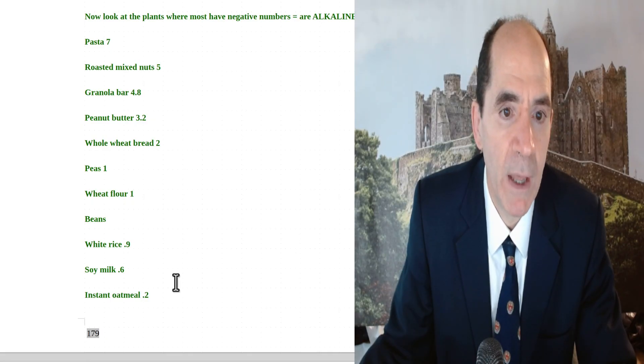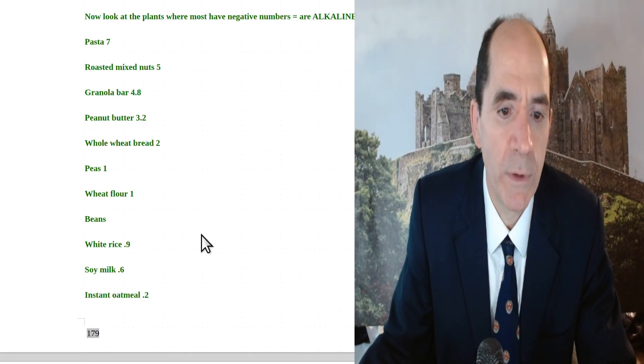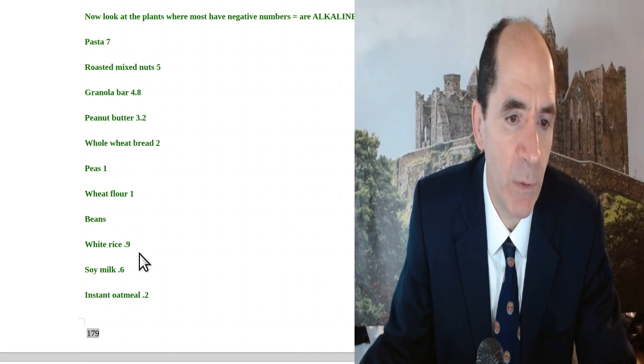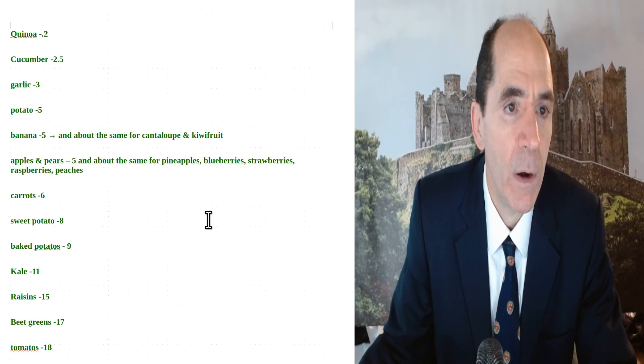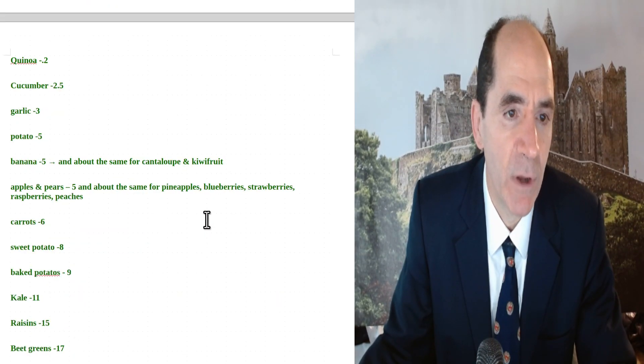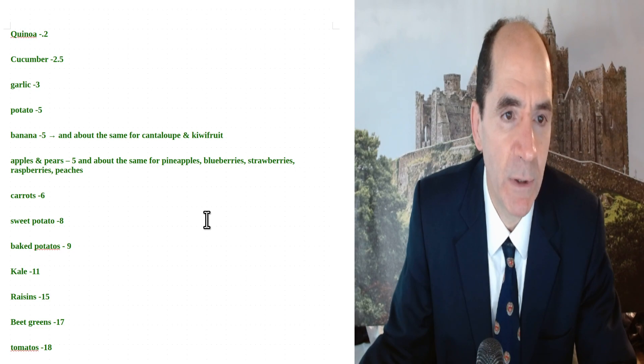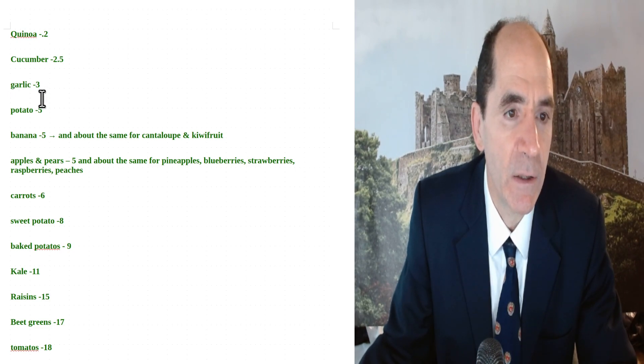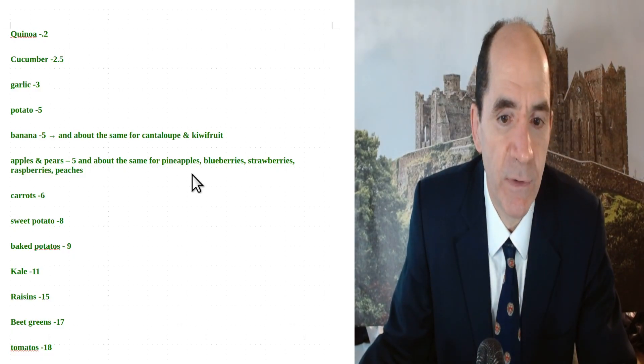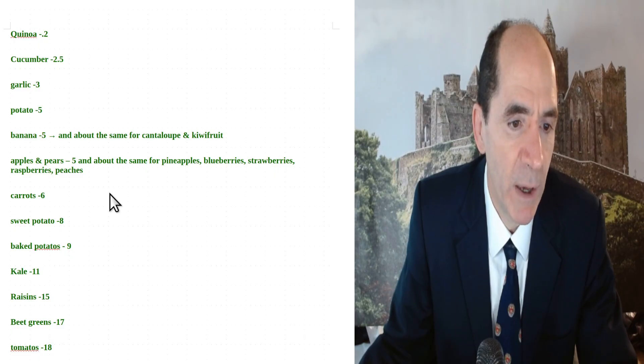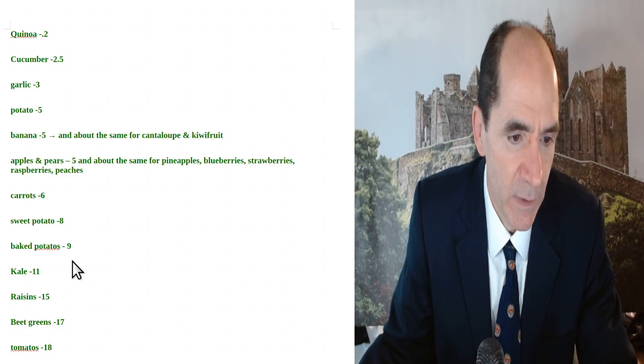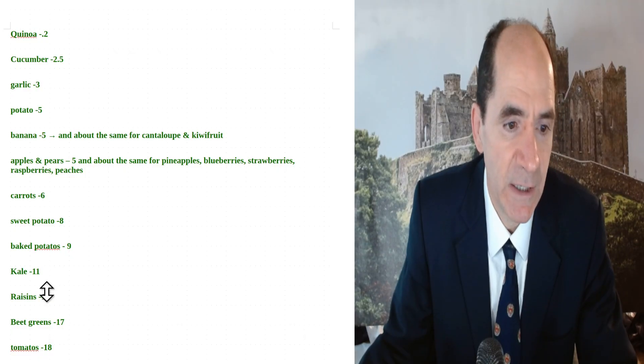The more negative the number, the better. The lower the number, the better. White rice less than 1, soy milk 0.6, instant oatmeal 0.2. Now we're getting into negative numbers. Quinoa negative 0.2, which I'm a little surprised by because it's got a lot of protein. Garlic negative 3, potato negative 5, bananas negative 5. So the more negative the better in this context. Baked potato negative 9. Beet greens negative 17, kale negative 11. So those are very alkaline.